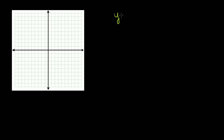Let's do a couple more examples graphing rational functions. So let's say I have y is equal to 2x over x plus 1. The first thing we might want to do is identify our horizontal asymptotes, if there are any.